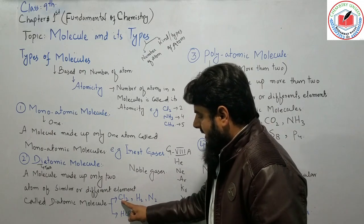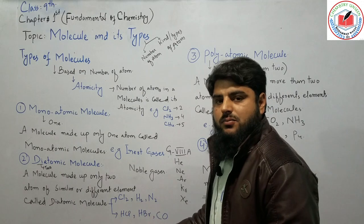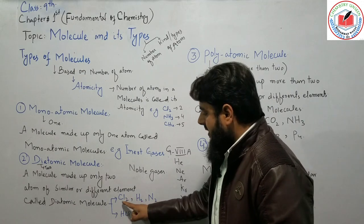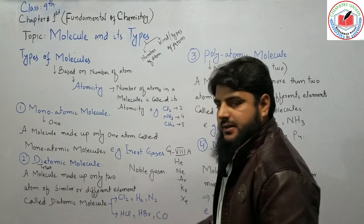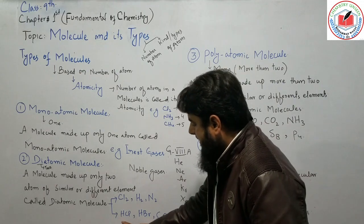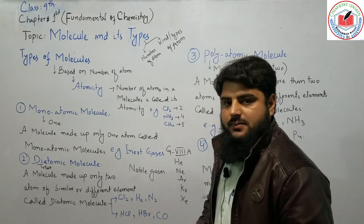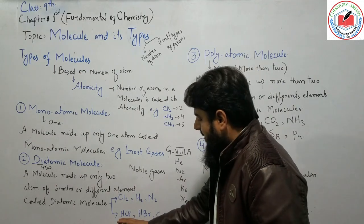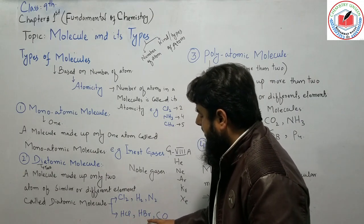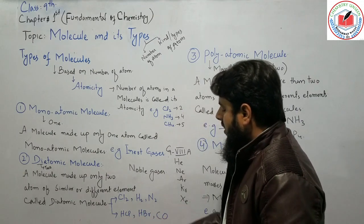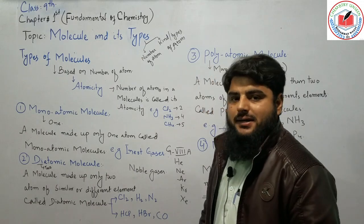Diatomic molecules can be made of similar elements, such as nitrogen (N2) and hydrogen (H2), or from different elements, such as HCl, HBr, and CO. Whether similar or different, a molecule made of exactly two atoms is called diatomic.